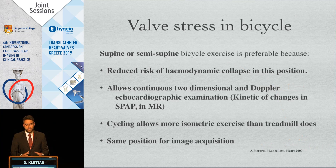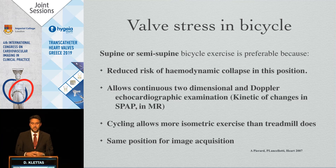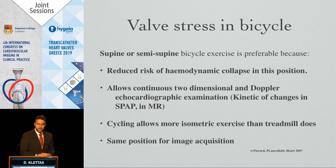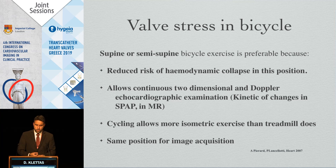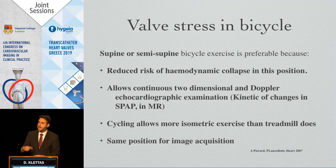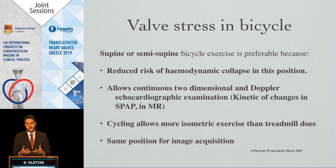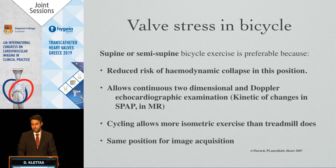Supine or semi-supine bicycle exercise is preferable because there is reduced risk of hemodynamic collapse in this position. It allows continuous two-dimensional and Doppler measurements throughout the examination. The patient remains in the same position throughout the test, and cycling allows more isometric exercise than treadmill, which increases intracavity pressures, provoking mitral leak.